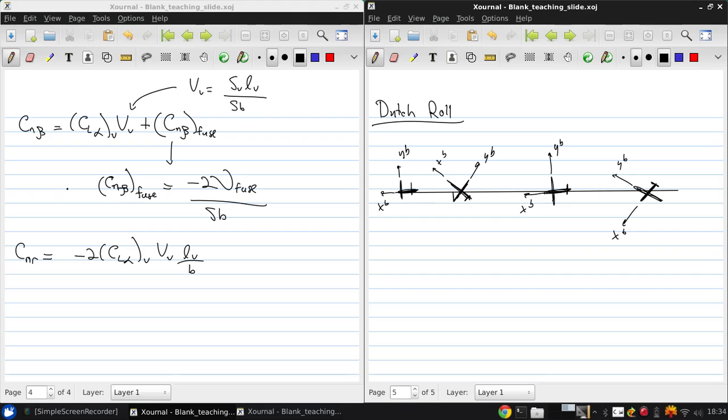Now, in reality, the Dutch Roll is more complicated and involves significant roll motion. That roll resembles the motion of a Dutch speed skater, which is where the name comes from, apparently.